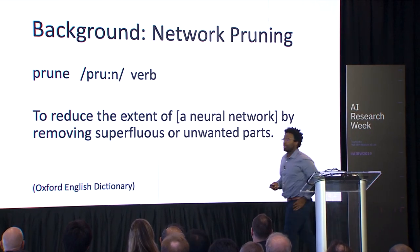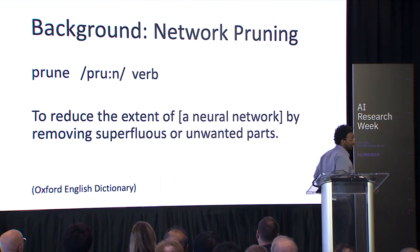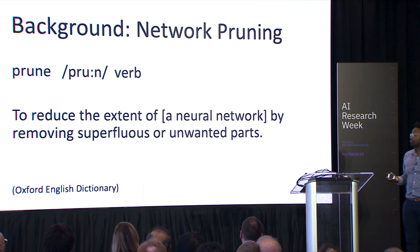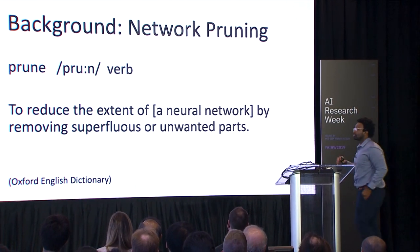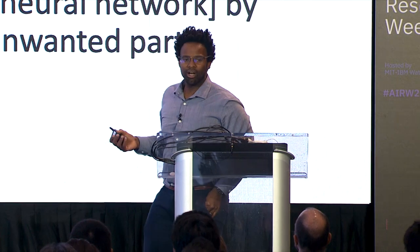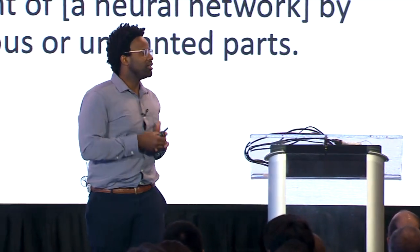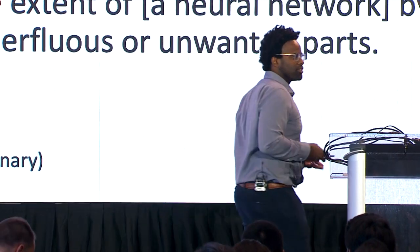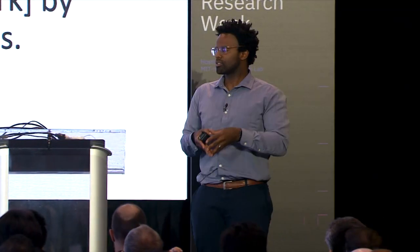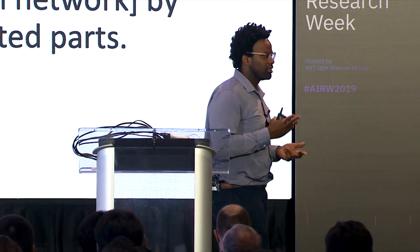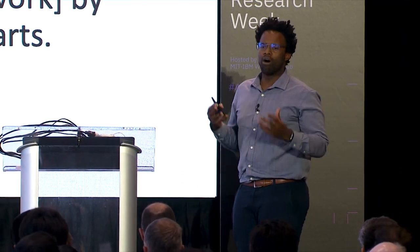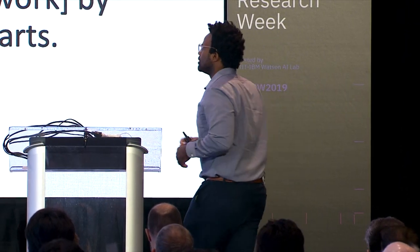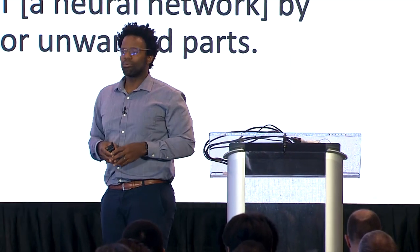My name is Michael Carvin. Today I'm talking about work we've been doing with the supportive lab on the lottery ticket hypothesis. The subtitle says we'd like to understand how to find sparse trainable neural networks. I'm interested in how we can reduce the overwhelming burden in terms of costs such as energy, money, and carbon consumption of training modern neural networks.